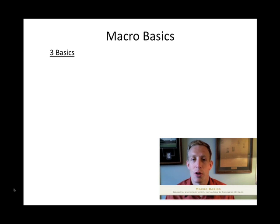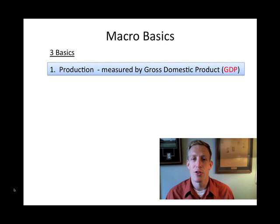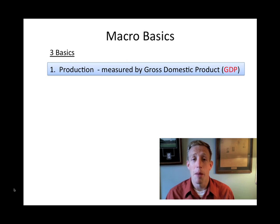One of those things looks at production. When we measure production at the macro level, we're measuring something called gross domestic product, which is the value of all of the things that are produced in a country over a given period of time. You can pretty much think of this as price times quantity, but we're taking the general price level and multiplying it times all of the things that we produce.